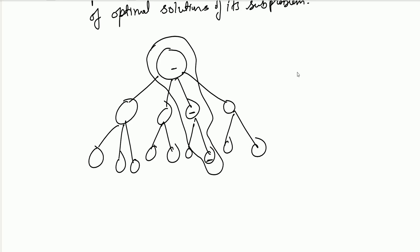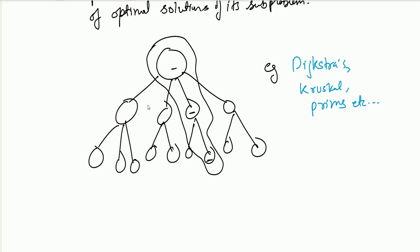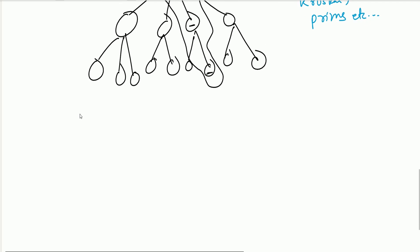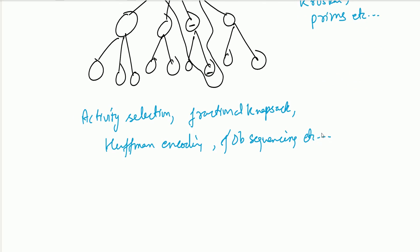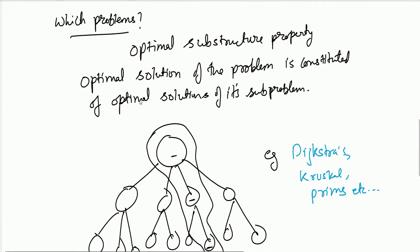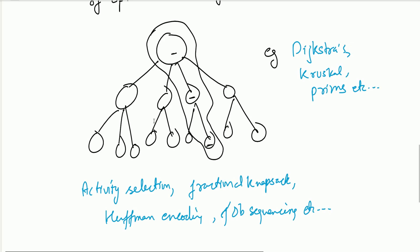Examples we have already studied include Dijkstra's, Kruskal's, and Prim's algorithms. We will now see additional problems solved using greedy algorithms: activity selection, rational knapsack, Huffman encoding, job sequencing, and others. Remember, only problems whose optimal solution is constituted of the optimal solutions of its sub-problems can be solved using the greedy method.